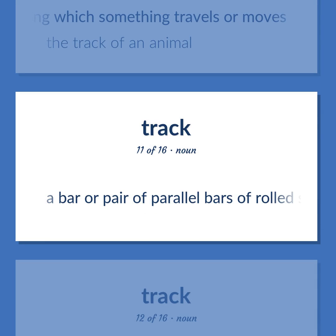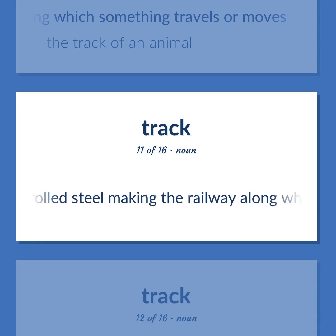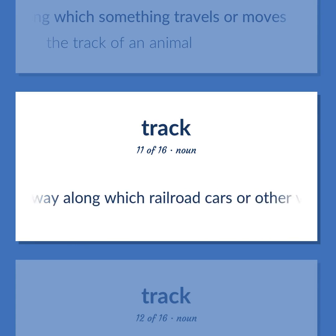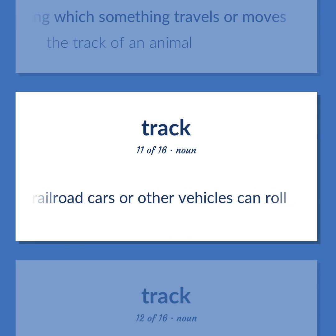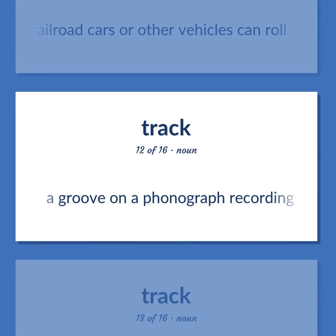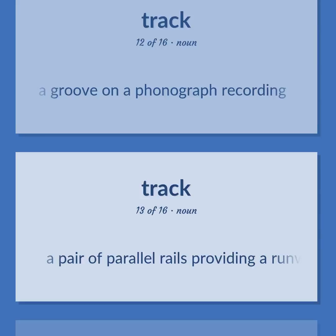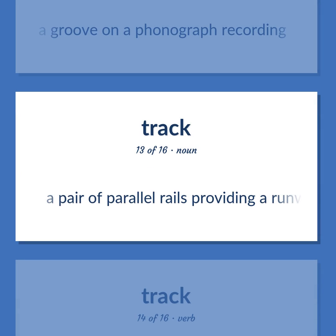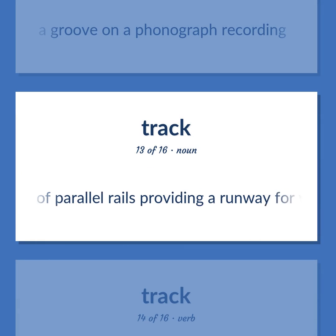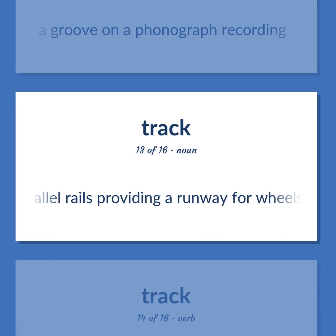Track: A bar or pair of parallel bars of rolled steel making the railway along which railroad cars or other vehicles can roll. A groove on a phonograph recording. A pair of parallel rails providing a runway for wheels.